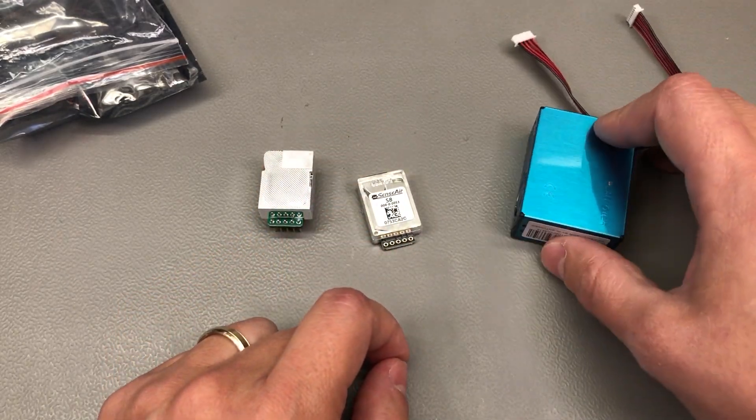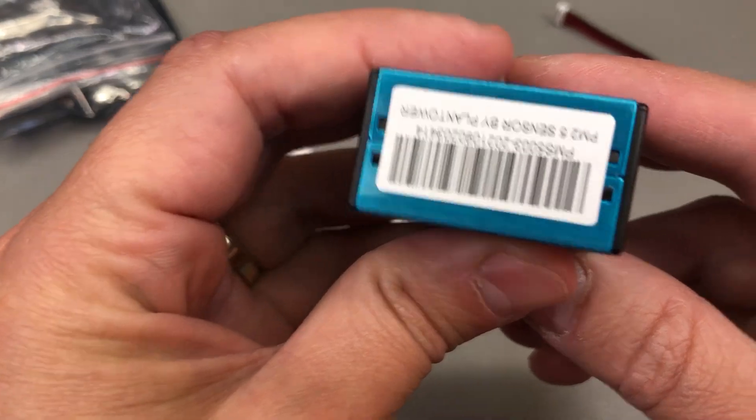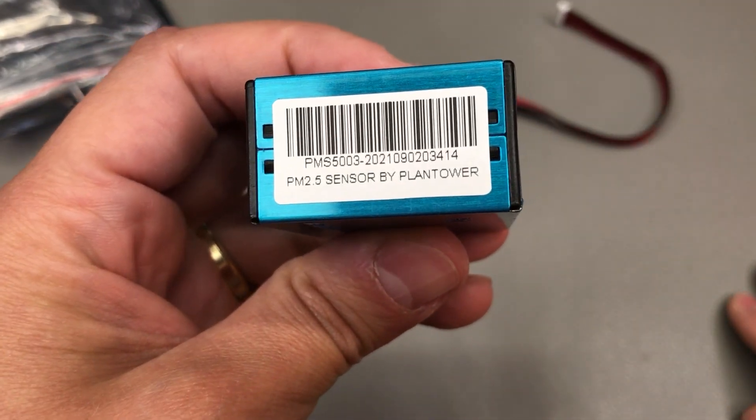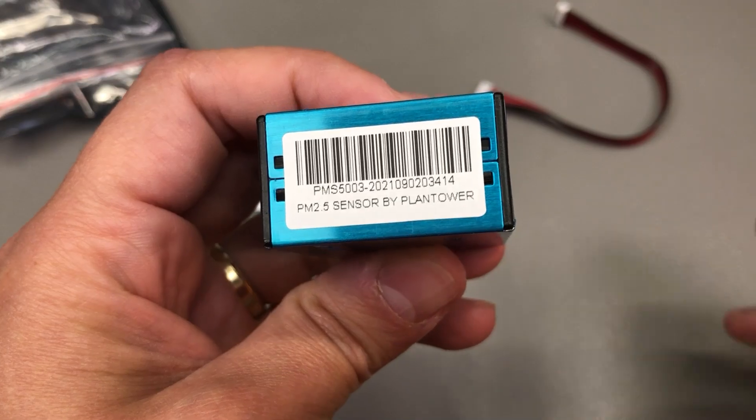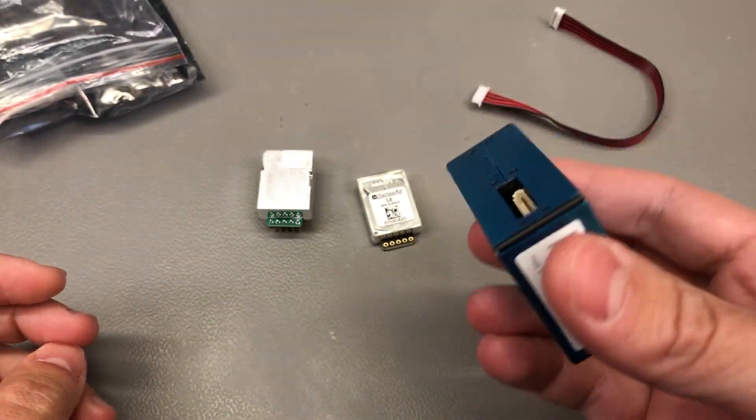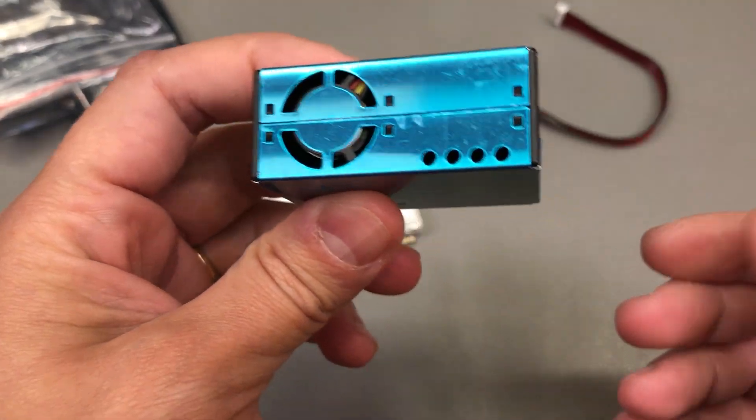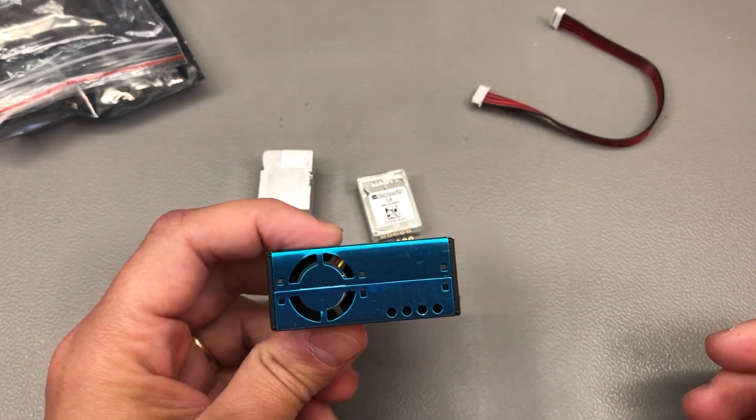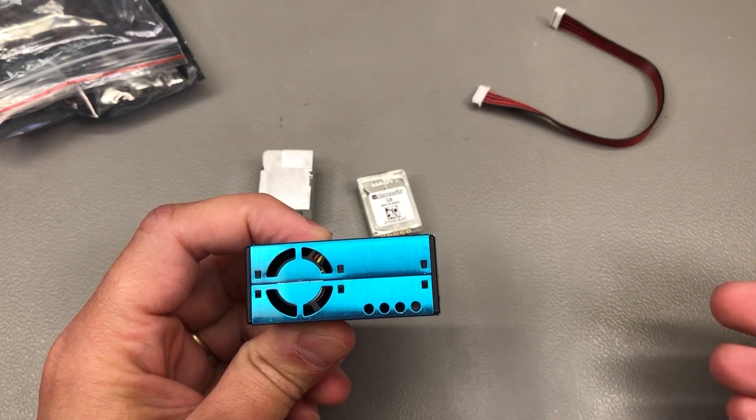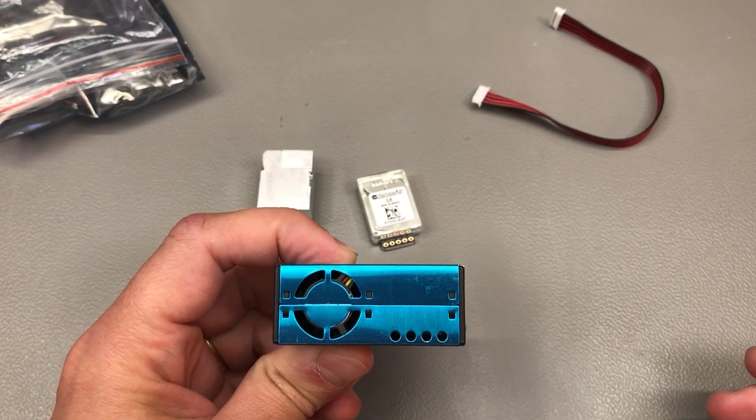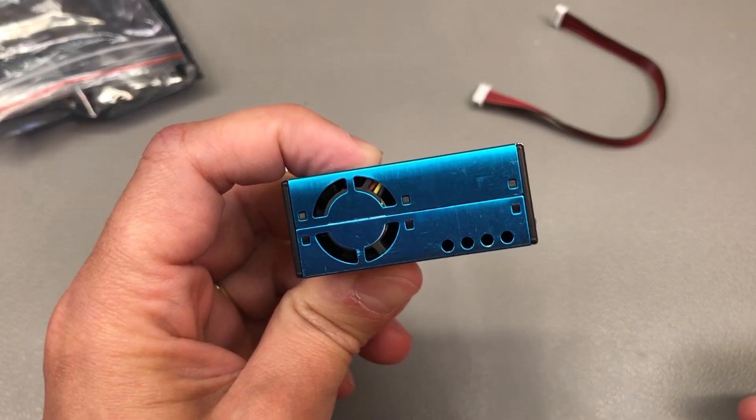I also got a PM2.5 sensor and the model number on this one is PMS5003-G5, once again a 5V power input. Takes less than 100mA in active mode and can measure PM2.5 particles with a resolution of 1 microgram per cubic meter within a range of 0-500 micrograms per cubic meter.